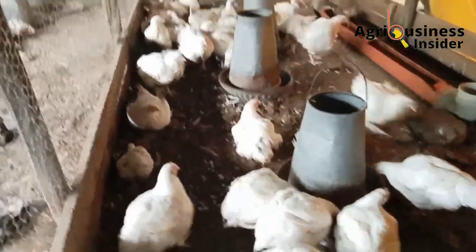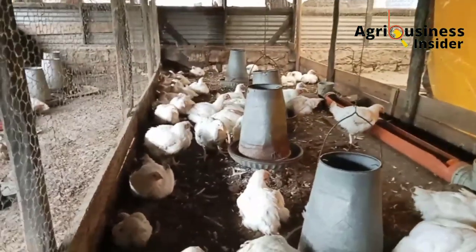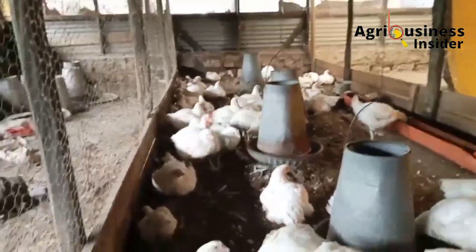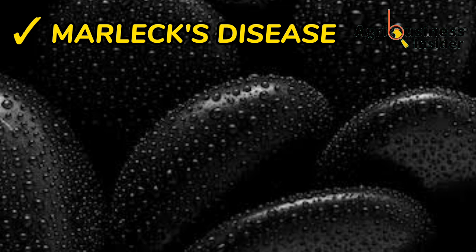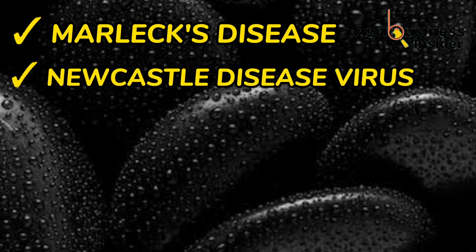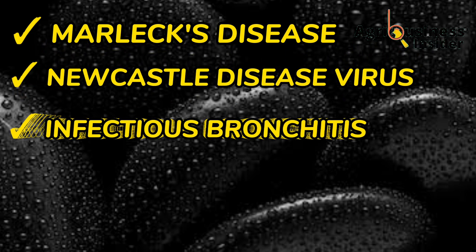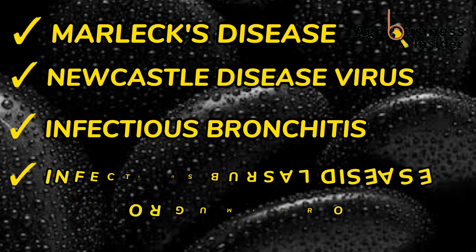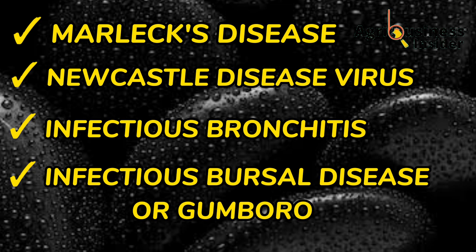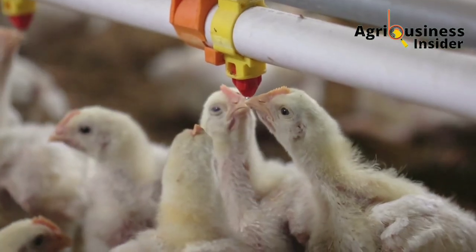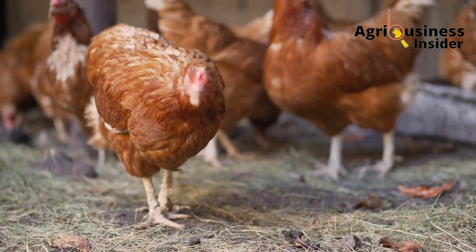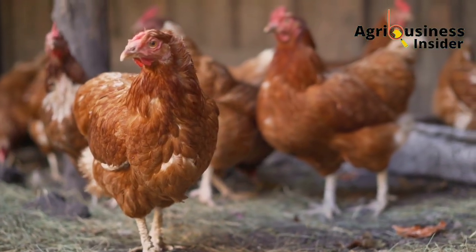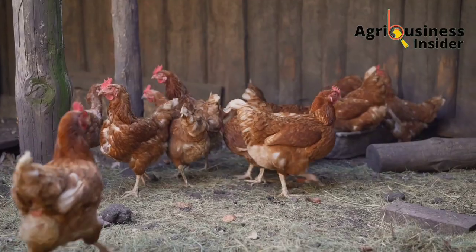In broiler chickens, the vaccination program should not lack vaccines for these diseases: number one, Marek's disease; number two, Newcastle disease virus; number three, infectious bronchitis; and number four, infectious bursal disease, also known as Gumboro disease. These vaccines should never be missing from your vaccination program as a broiler farmer.